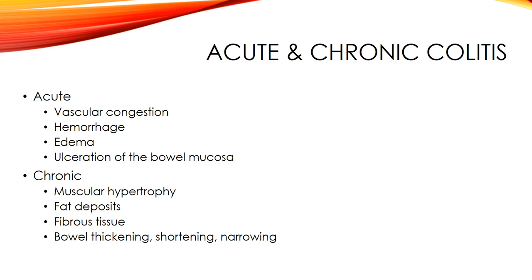With acute colitis, there is vascular congestion, possible hemorrhage, edema, and ulceration of the bowel mucosa — typically lasting days to a couple of weeks. With chronic colitis, it is a lifelong condition requiring management of symptoms, diet, and physical activity. Chronic colitis leads to muscular hypertrophy in the intestines, fat deposits, fibrous tissue, and bowel thickening, shortening, and narrowing.